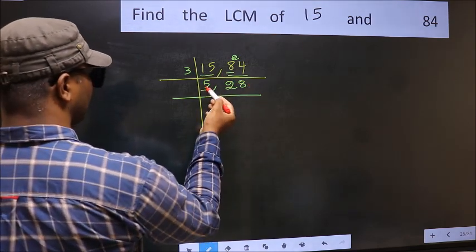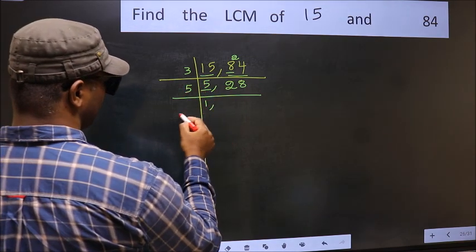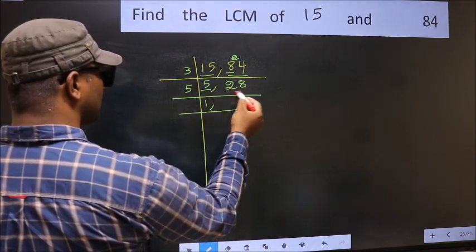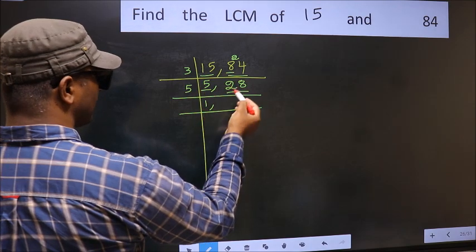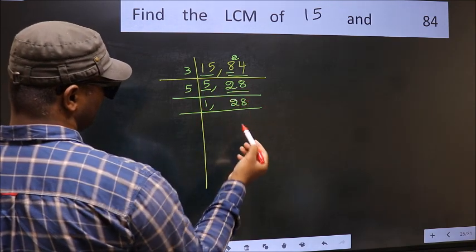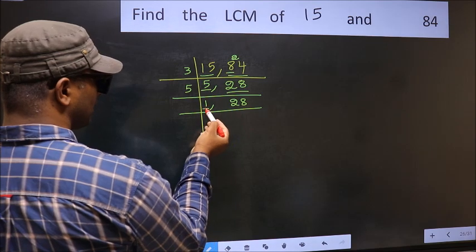Now here we have 5. 5 is a prime number, so 5 once 5. The other number 28 is not divisible by 5, so you write it down as it is.